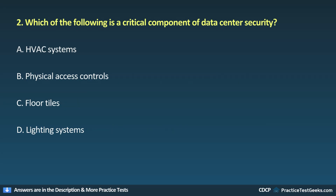Question 2. Which of the following is a critical component of data center security? A. HVAC systems. B. Physical access controls. C. Floor tiles. D. Lighting systems.